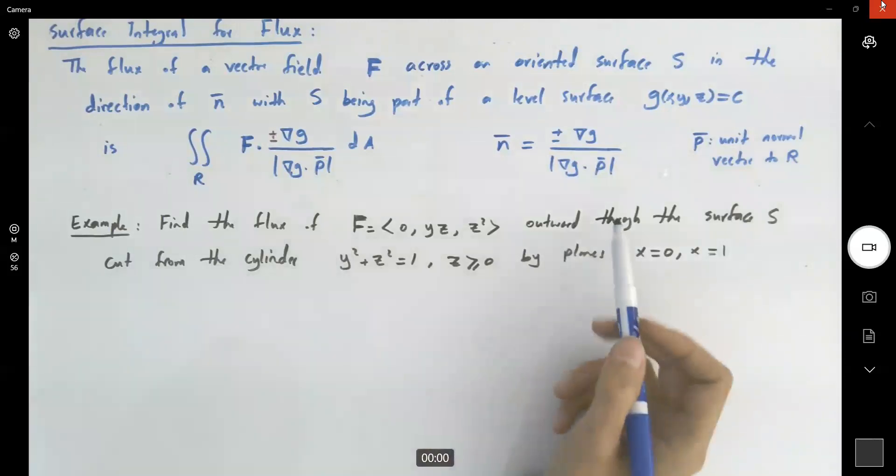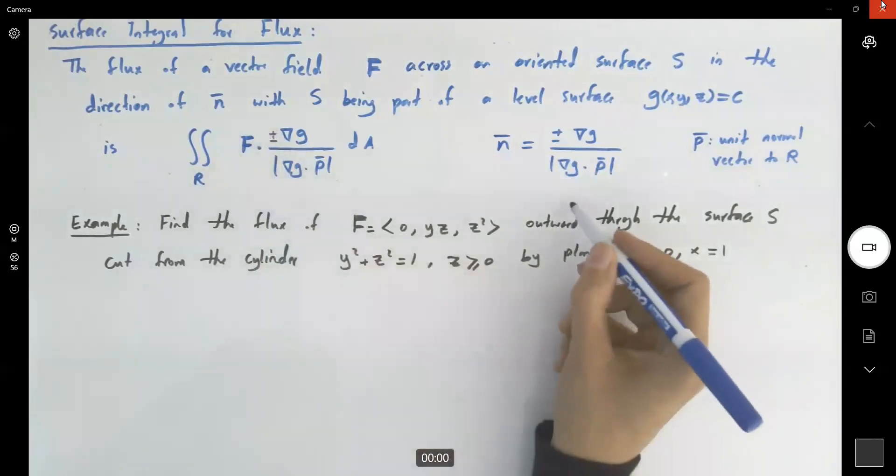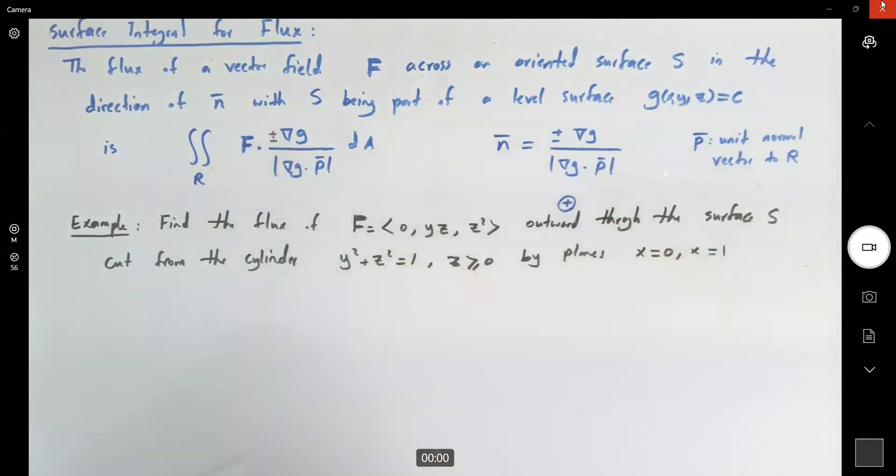Since we have an outward normal field on S, we're going to use the positive sign. We need to calculate the magnitude of the gradient of g dot p and do the calculation.